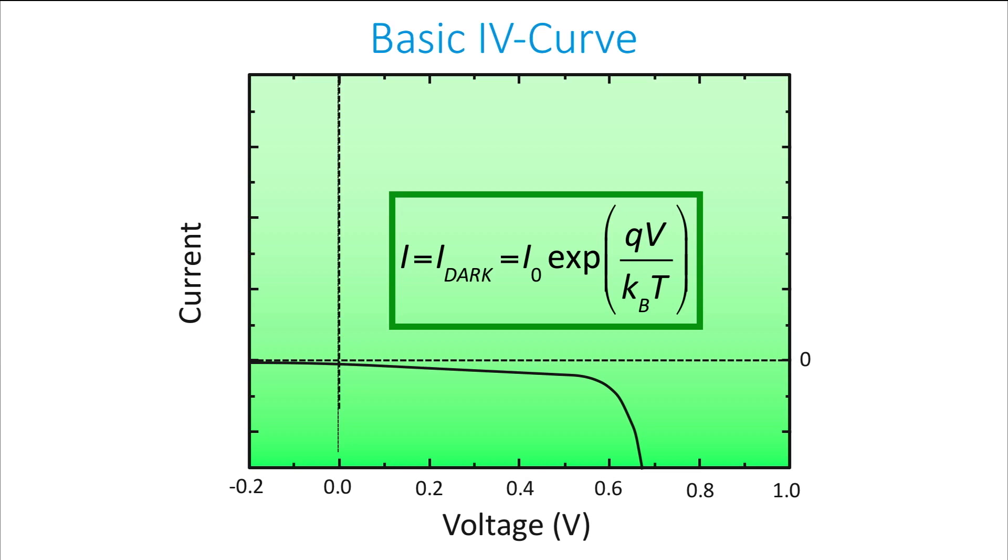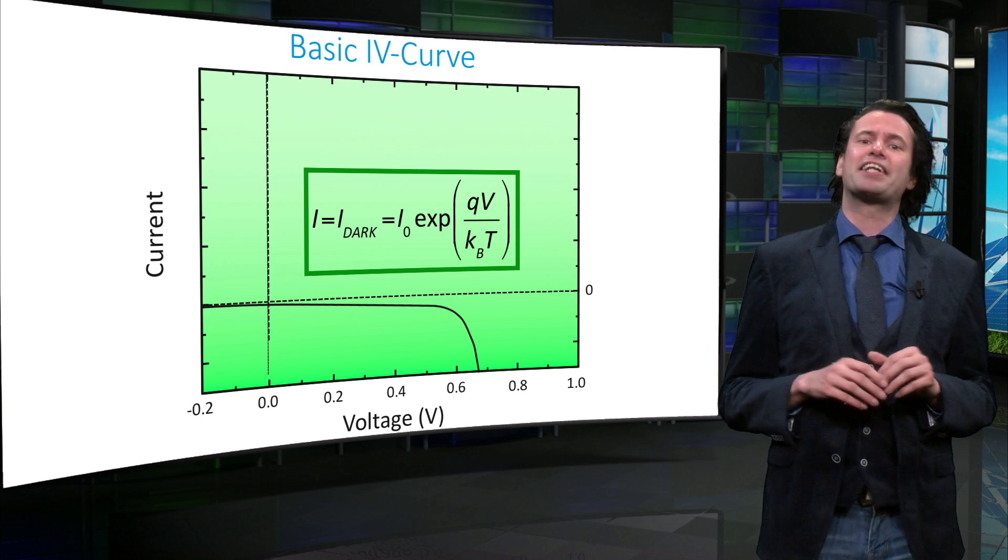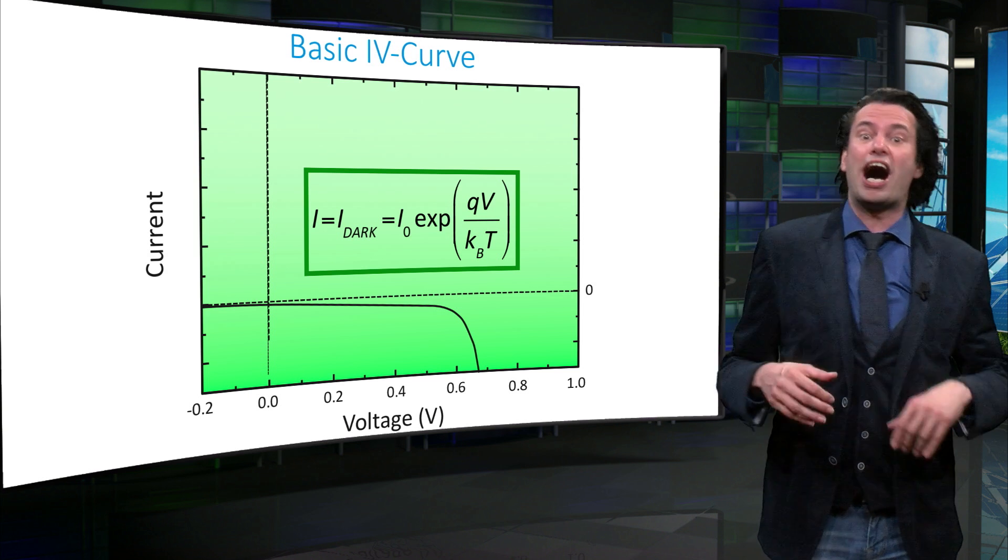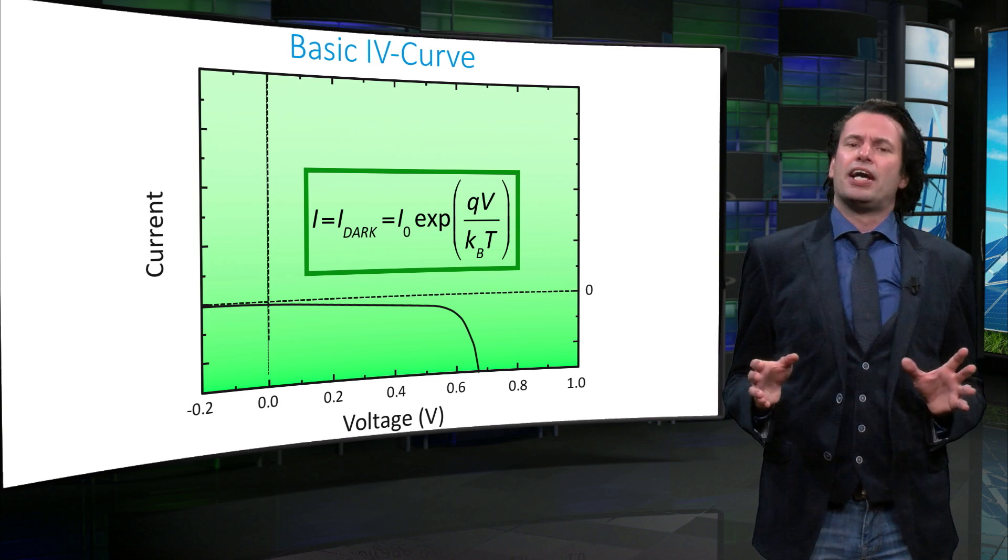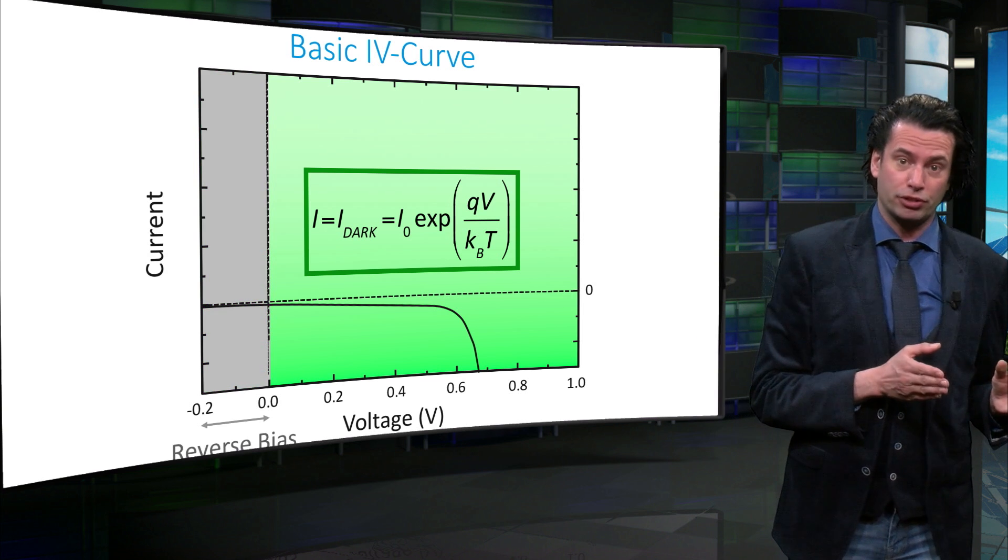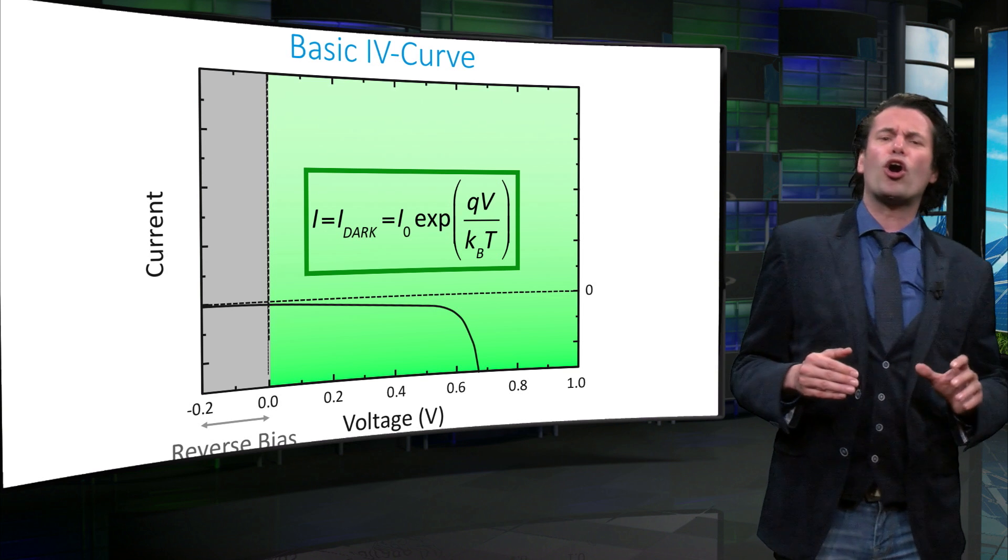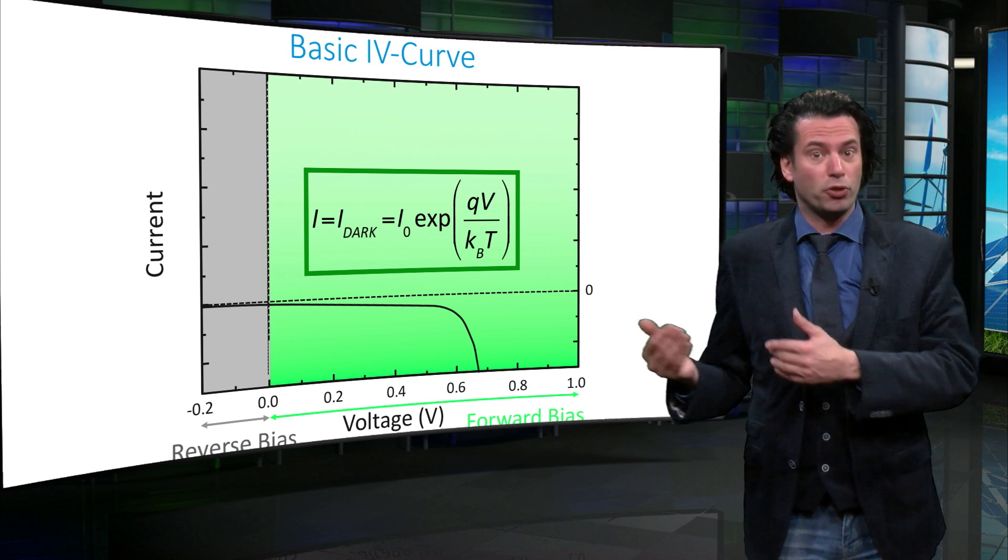The performance of a solar cell can be demonstrated by measuring its current versus the voltage employed on the device. Such measurement is reflected in a current voltage or IV curve. The electrical bias can be a reverse voltage, which means a negative voltage, or a forward voltage, a positive voltage.